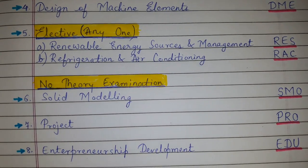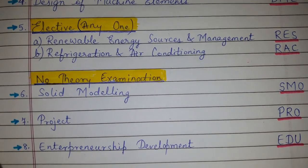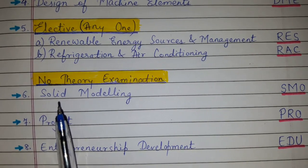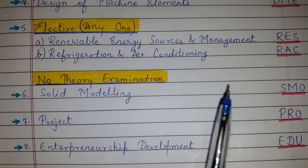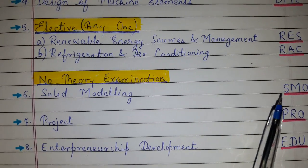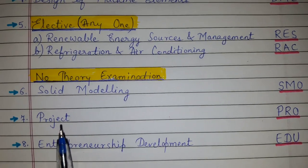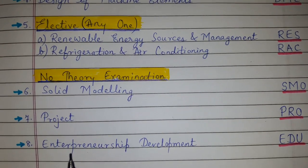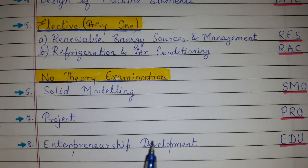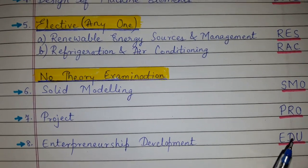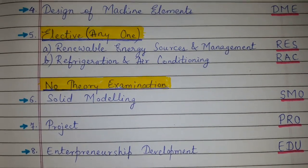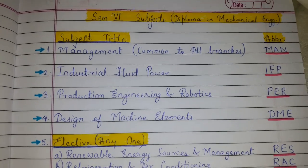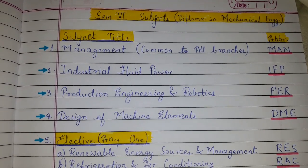There are also a few subjects with no theory examination — only practical and oral assessments. These include Solid Modeling, abbreviated as SMO, Project abbreviated as PRO, and Entrepreneurship Development abbreviated as EDU. These are the subjects for semester 6 diploma in mechanical engineering.